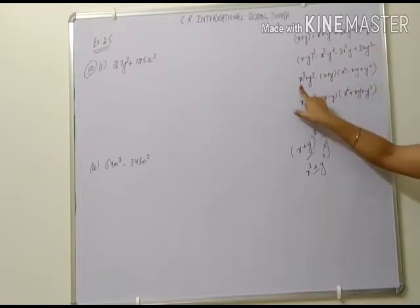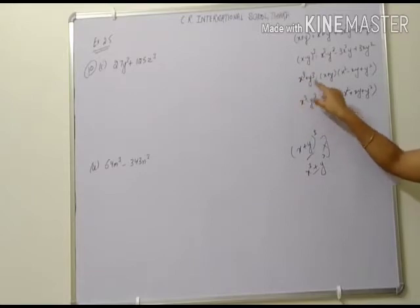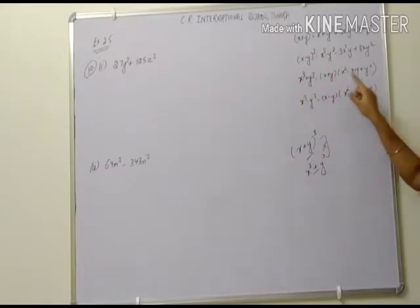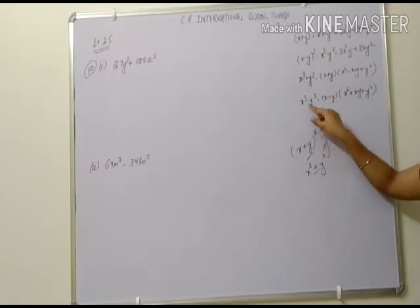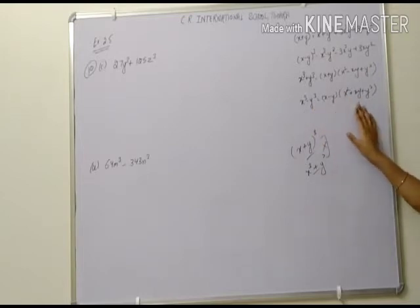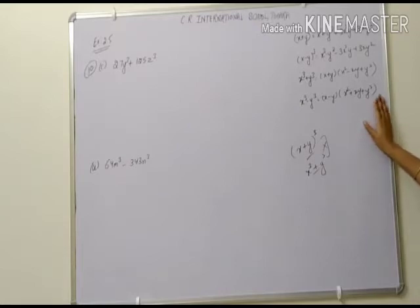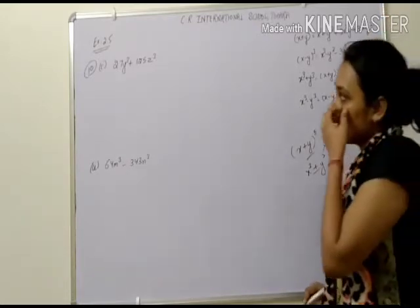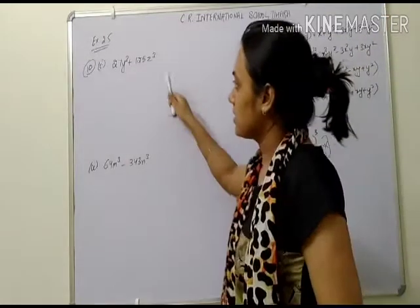As we did today: x cubed plus y cubed equals x plus y, into x squared minus xy plus y squared. And x cubed minus y cubed equals x minus y, into x squared plus xy plus y squared. In the next portion, we have to factorize these terms — two terms which have to be factorized.